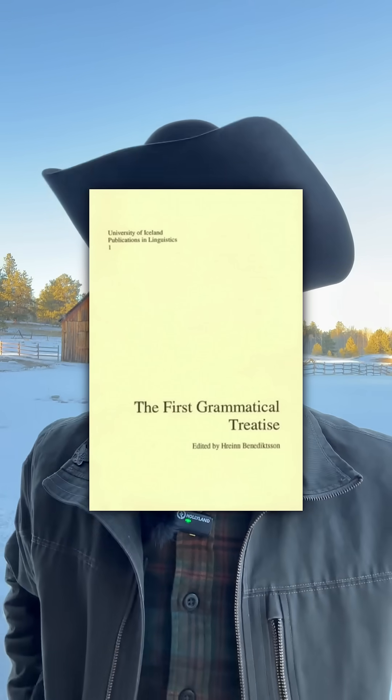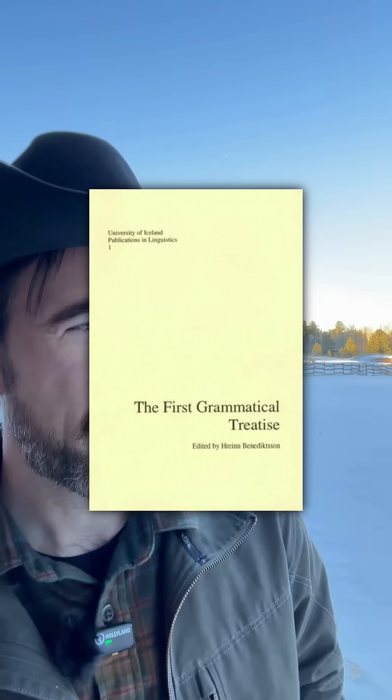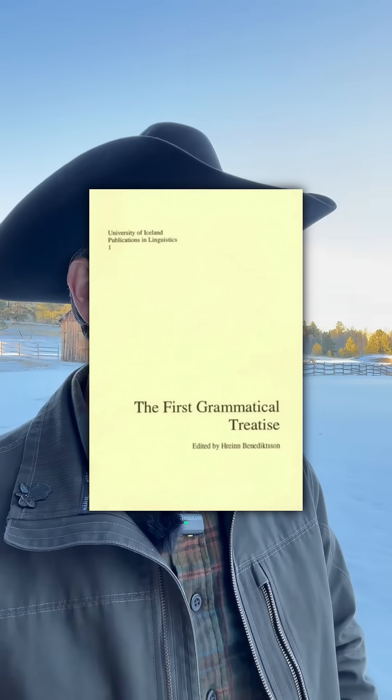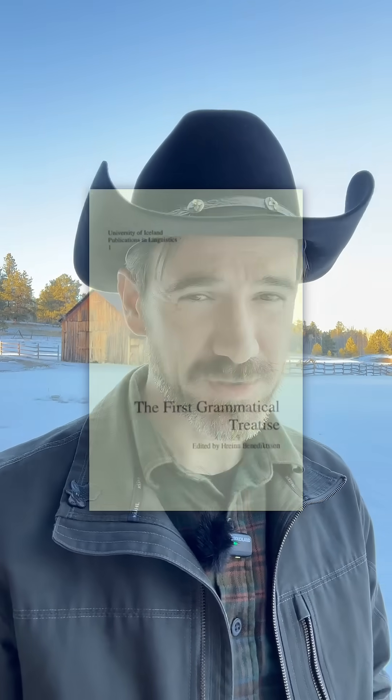And then with Old Norse, we have the special resource of the First Grammatical Treatise, written down in about 1140. Someone — we don't know who — wrote an account of how to better write Old Norse using the Roman alphabet, and they point out several vowel sounds that the Latin alphabet can't write very well. This gives us a sense of what sounds that alphabet wasn't reflecting, and that's a wonderful resource for reconstructing Old Norse sound.